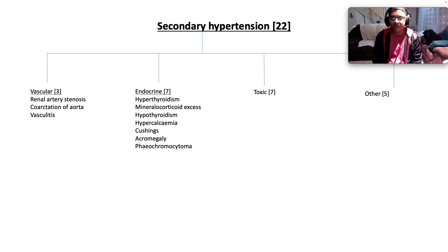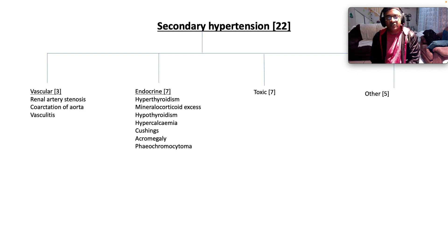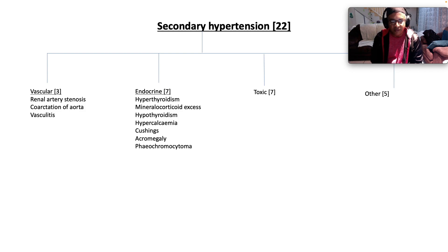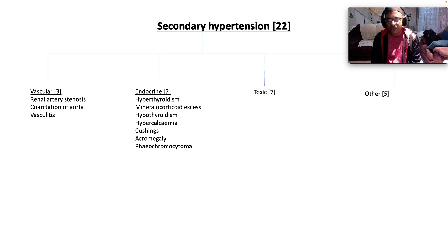Endocrine disorders like hyperthyroidism — the claim to fame of hyperthyroidism is that it causes isolated systolic hypertension. Mineralocorticoid excess, which is basically hyperaldosteronism, can be Conn's syndrome due to an aldosteronoma, or due to adrenal hyperplasia. Hypothyroidism usually causes isolated diastolic hypertension. Hypercalcemia can cause it. Cushing's — because too much steroid will overwhelm the receptor 11-beta-hydroxysteroid dehydrogenase 2, which then switches on the ENAC channel, bringing in sodium and dumping potassium.